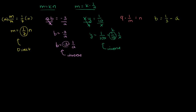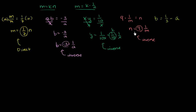9 times 1 over m is equal to n. This one's already done for us. If we just flip the left and the right-hand side, we get n equals 9 times 1 over m — n equals some constant times 1 over m. So n varies inversely with m. And remember, if n varies inversely with m, that also means that m varies inversely with n. Those two things imply each other.